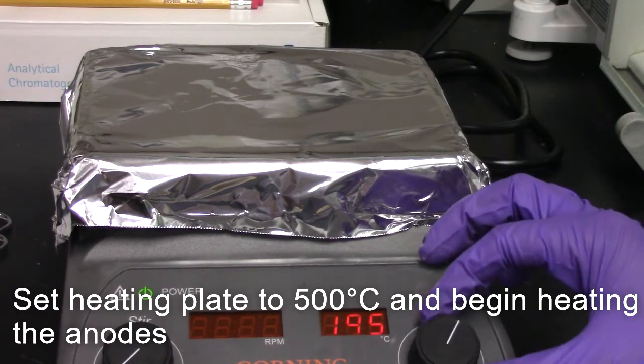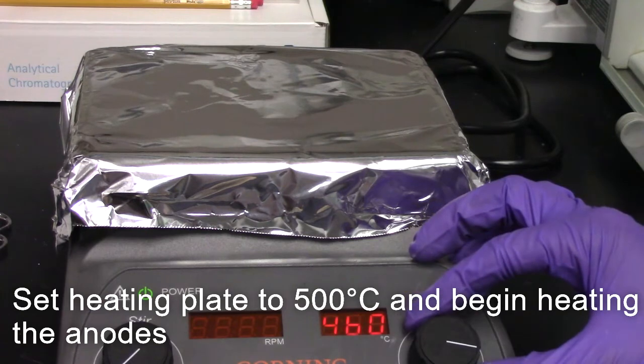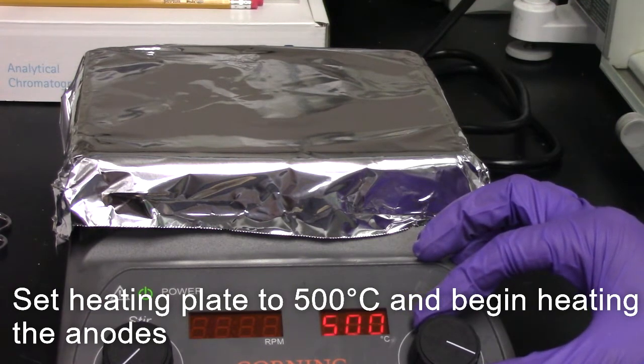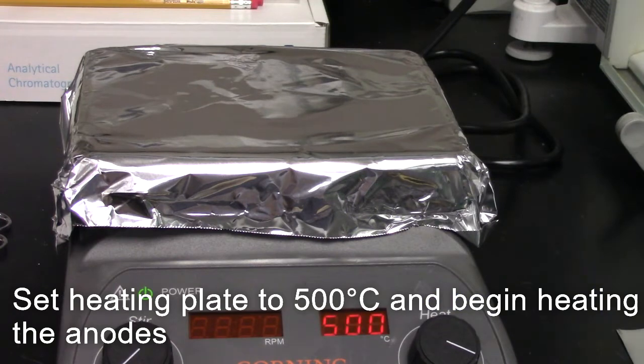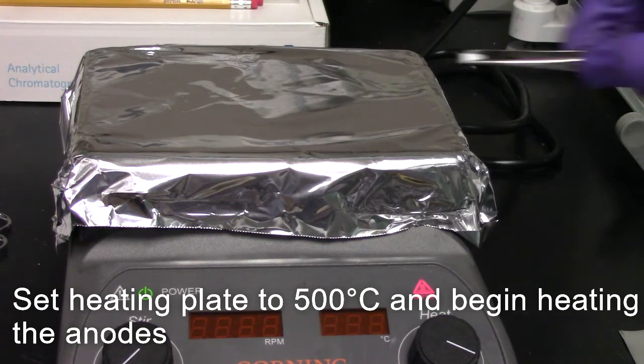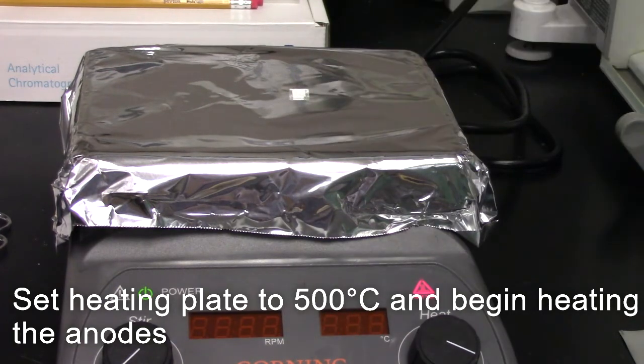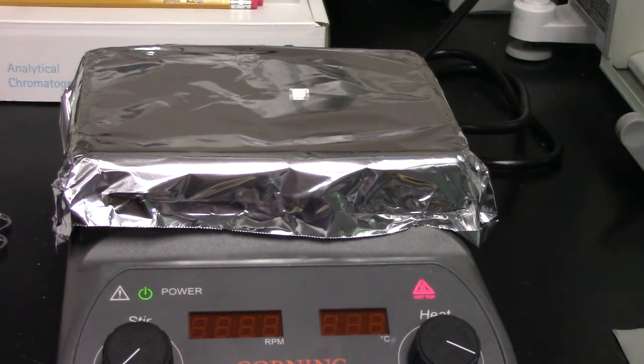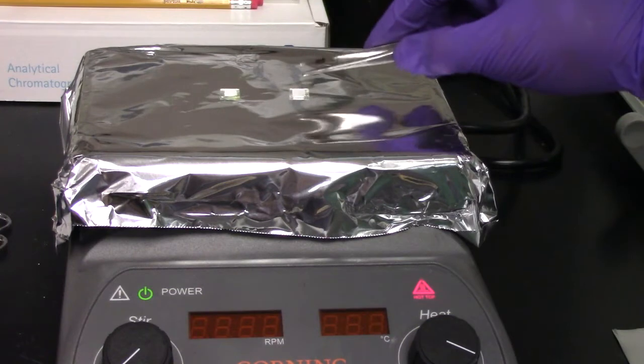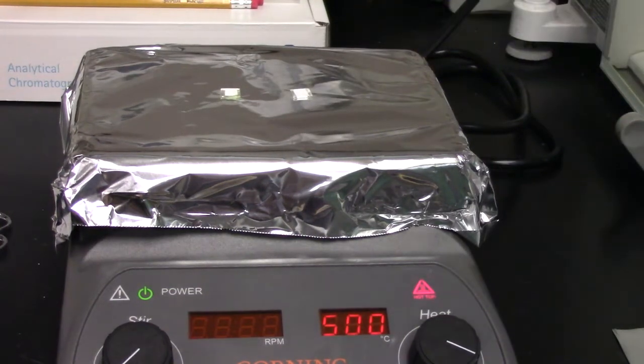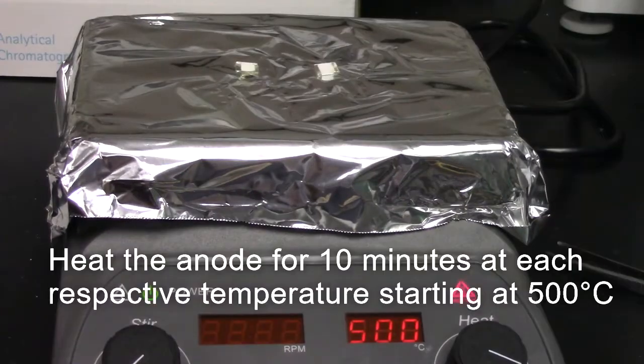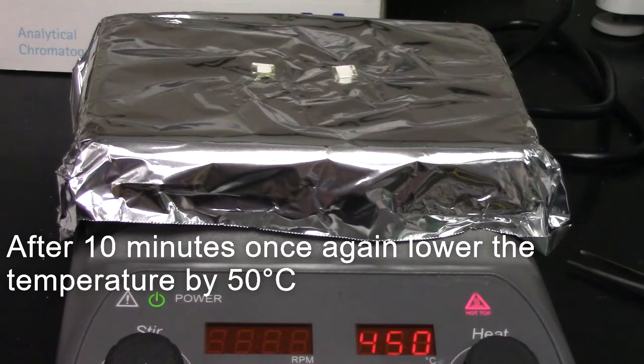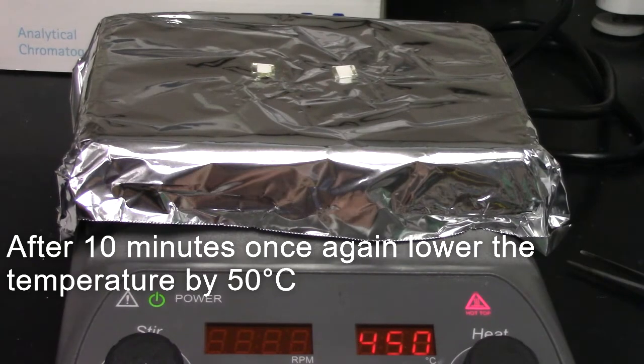Begin by setting the heating plate to 500 degrees centigrade. The anode will be heated for 10 minutes at each respective temperature.